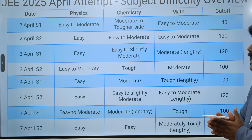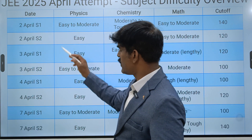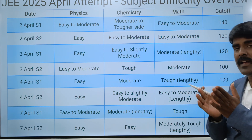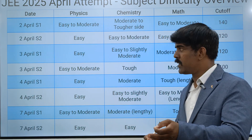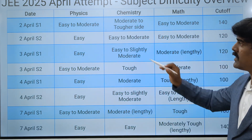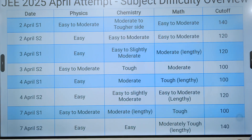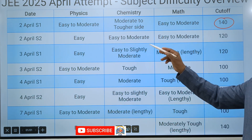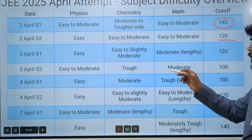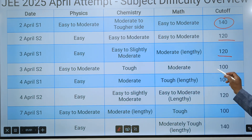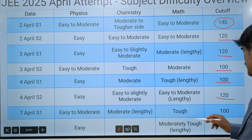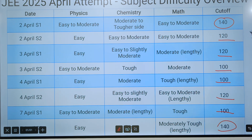The April 2025 attempt is not yet fully analysed since sessions run from S1 to S2 and cutoff is not final. Based on available data, the expected session-wise cutoff marks are: April 2nd session 1 — 140; April 2nd session 2 — 120; April 3rd session 1 — 120; April 3rd session 2 — 100; April 4th session 1 — 100; April 4th session 2 — approximately 120; April 7th session 1 — 100; April 7th session 2 — 140. So the lowest expected cutoff is 100 and the highest is 140.